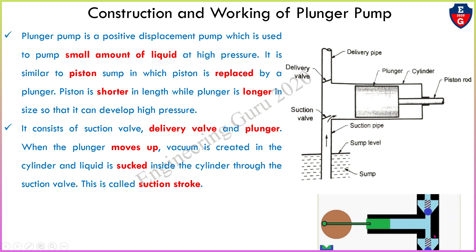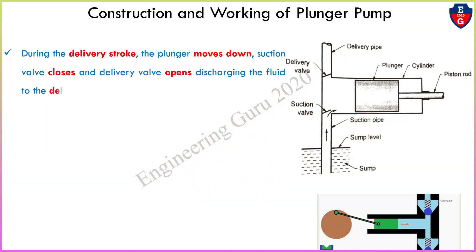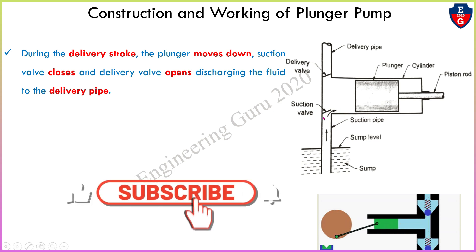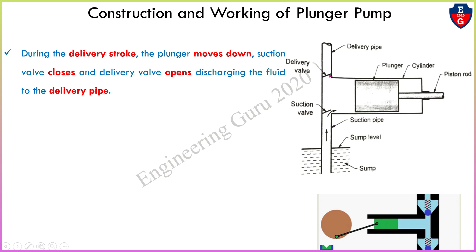During the delivery stroke, when the plunger moves down, the suction valve closes and the delivery valve opens to direct the fluid to the delivery pipe. Whenever the plunger moves in the downward direction, the suction valve will be closed — it is a one-way valve — and due to the pressure, the delivery valve will open and fluid enters into the delivery pipe. This is called the delivery stroke.